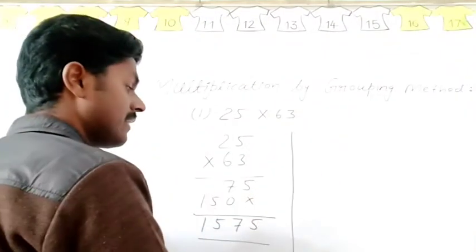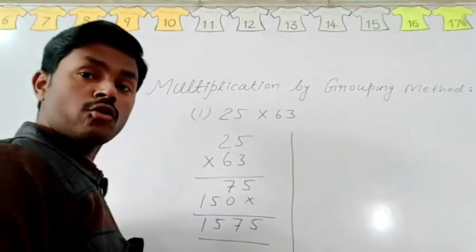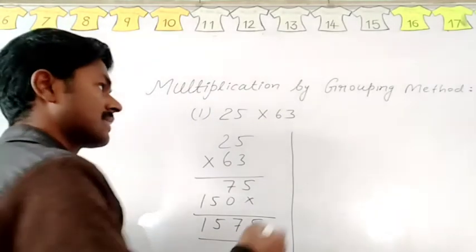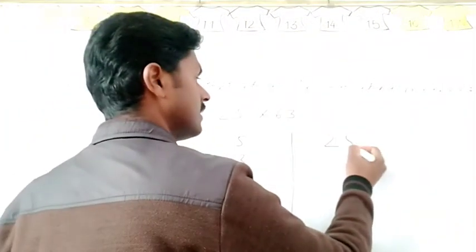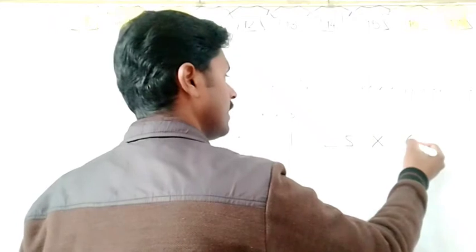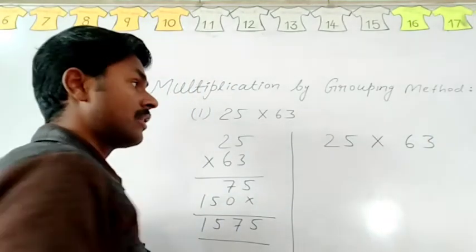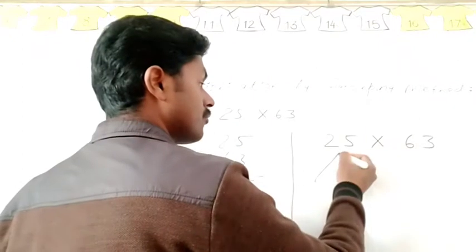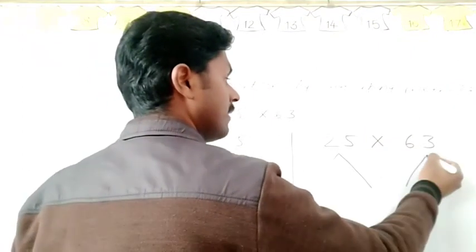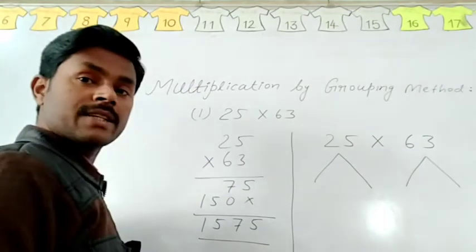Now, how will you multiply these two numbers in grouping method? Let's learn about this. In grouping method, we have to multiply 25 and 63. So first of all, divide into groups 25 and divide into groups 63.